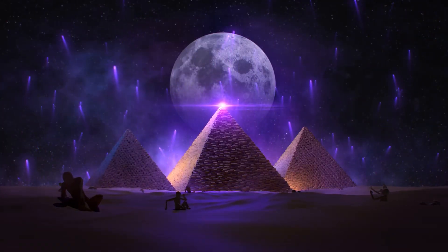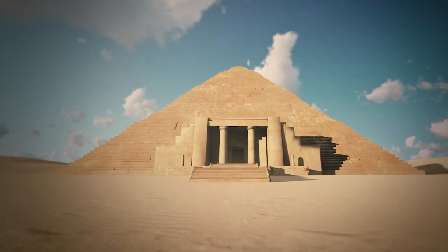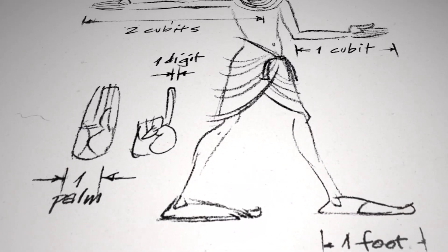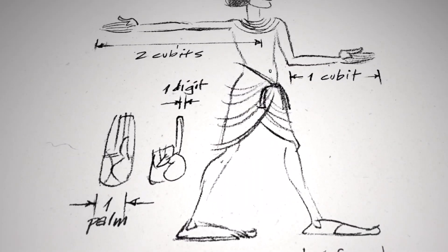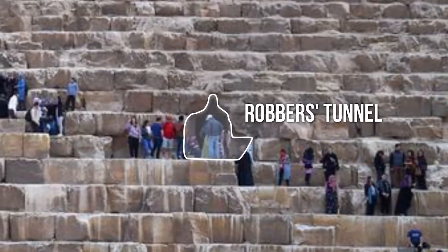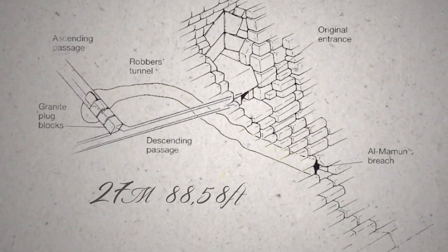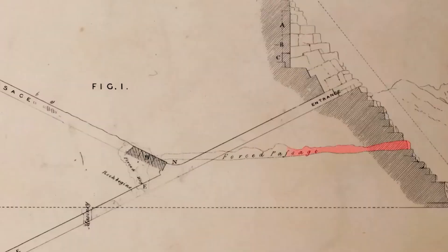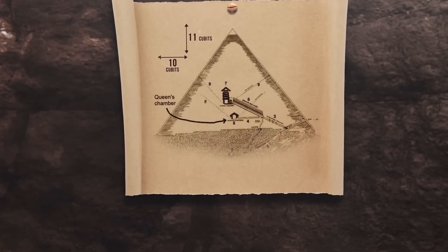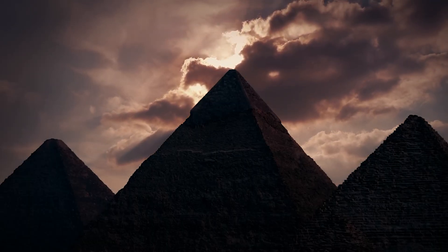It's also important to remember that building the pyramid was not just a construction project. It was a deeply religious and political act. The pharaoh was seen as a god on earth, and the pyramid was meant to help him ascend to the heavens after death. Every detail, from the shape of the pyramid to the items buried within, had spiritual meaning. The effort put into building the pyramid showed the power of the pharaoh and united the people under a shared goal.